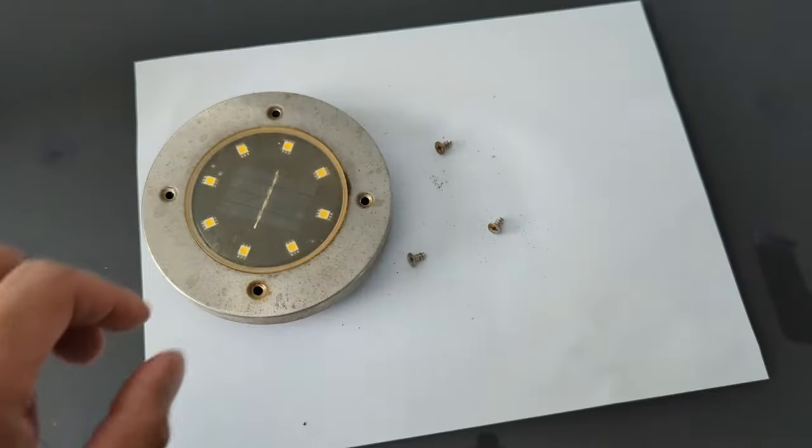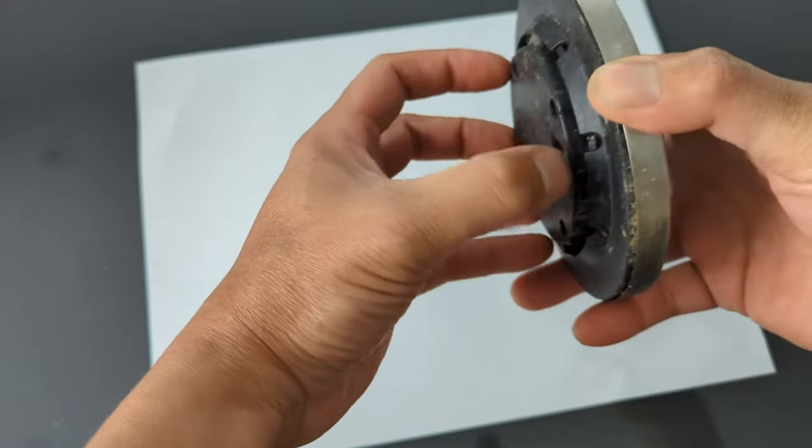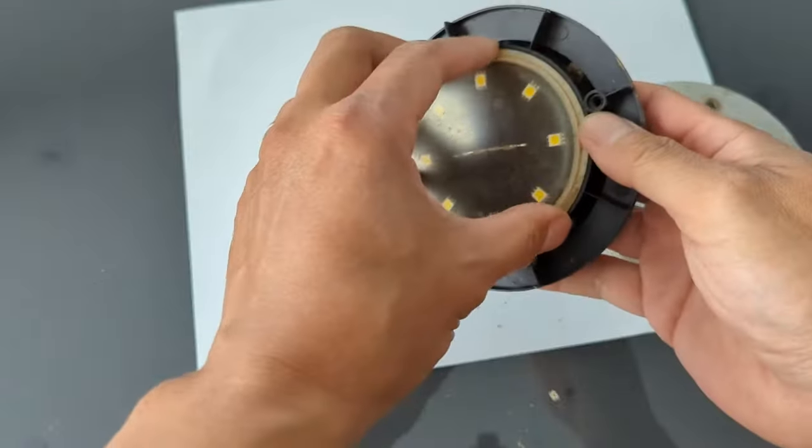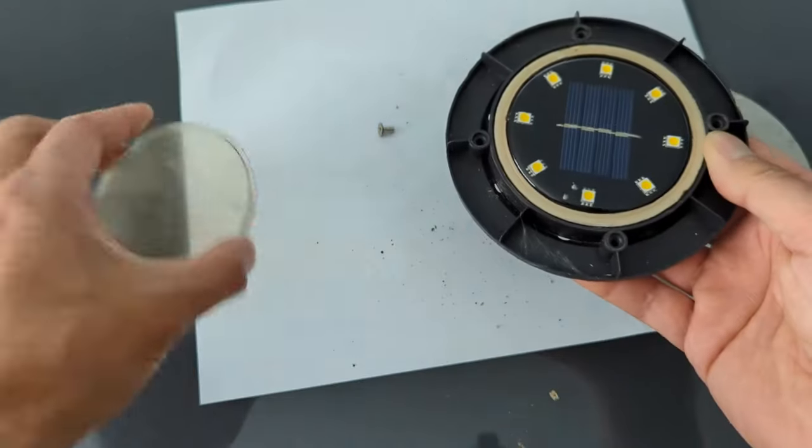Start by removing the four screws and when you do that you'll see that there's a plastic cover over the solar panel which you can easily remove. Once you do that there's a rechargeable double A battery inside and that's what I'm going to swap out.